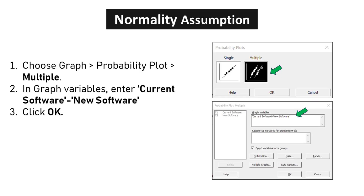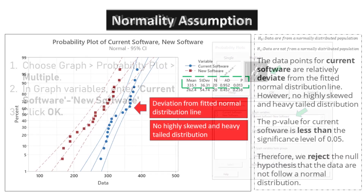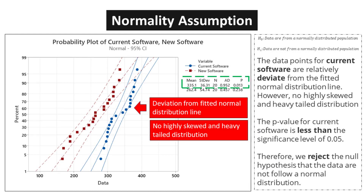Normality test using Anderson-Darling. Choose Graph, Probability Plot, Multiple. In graph variables, enter current software and new software. Click OK. The data points for current software are relatively deviate from the fitted normal distribution line; however, no highly skewed and heavy-tailed distribution. The p-value for current software is less than the significance level of 0.05. Therefore, we reject the null hypothesis that the data do not follow a normal distribution.